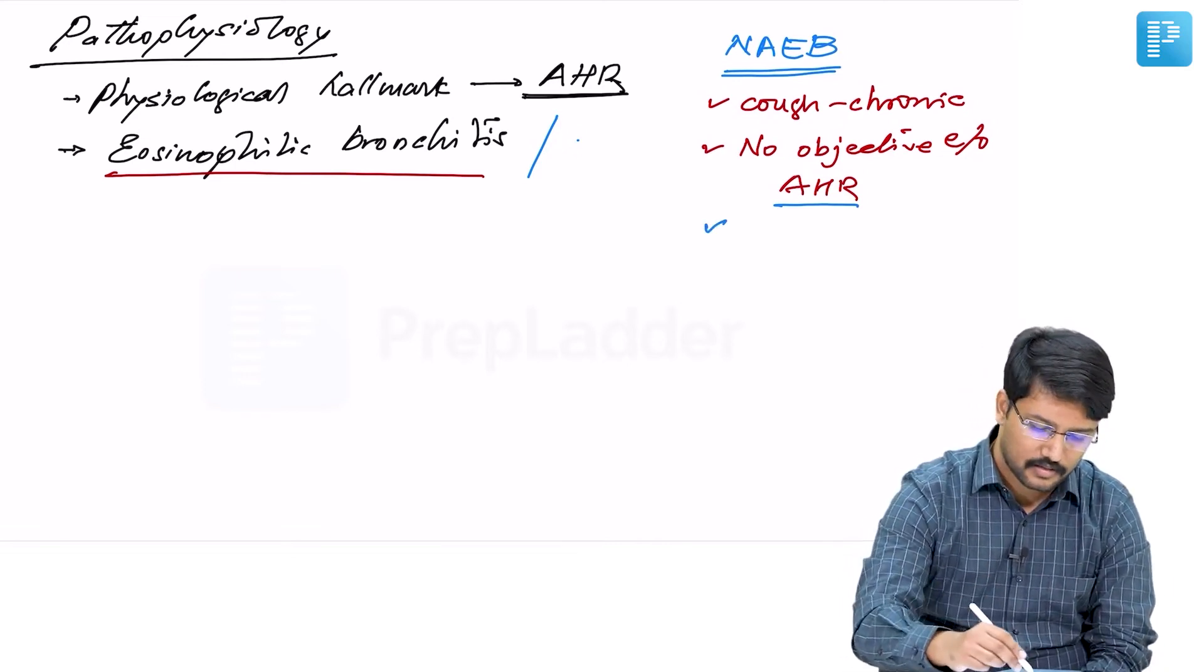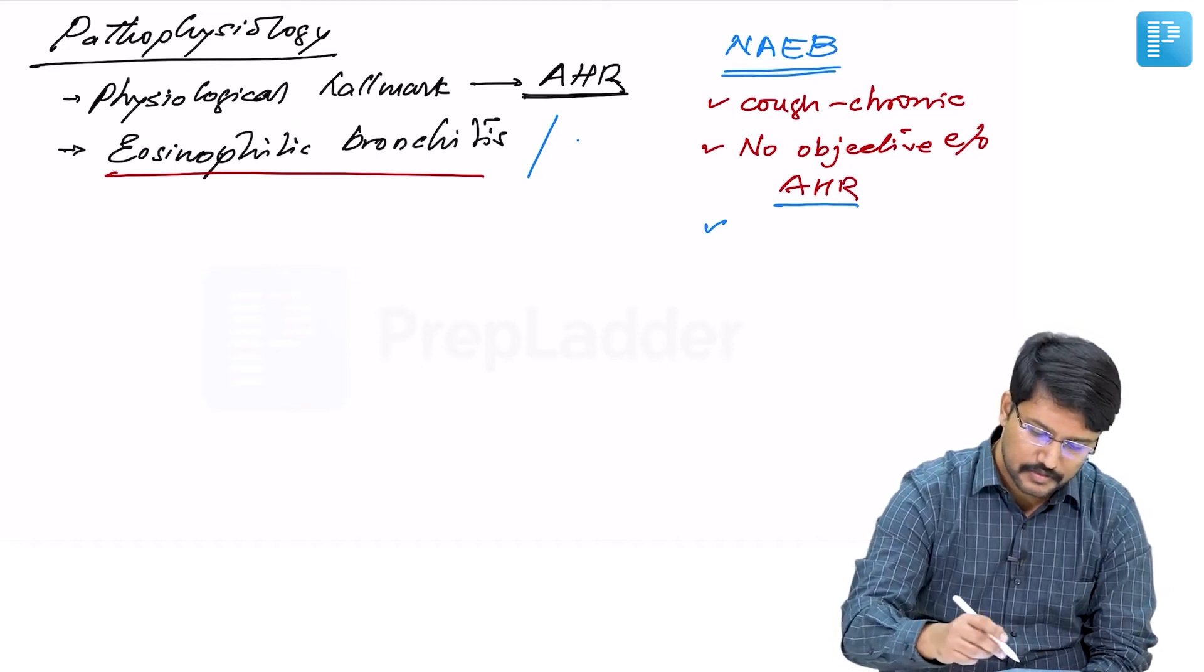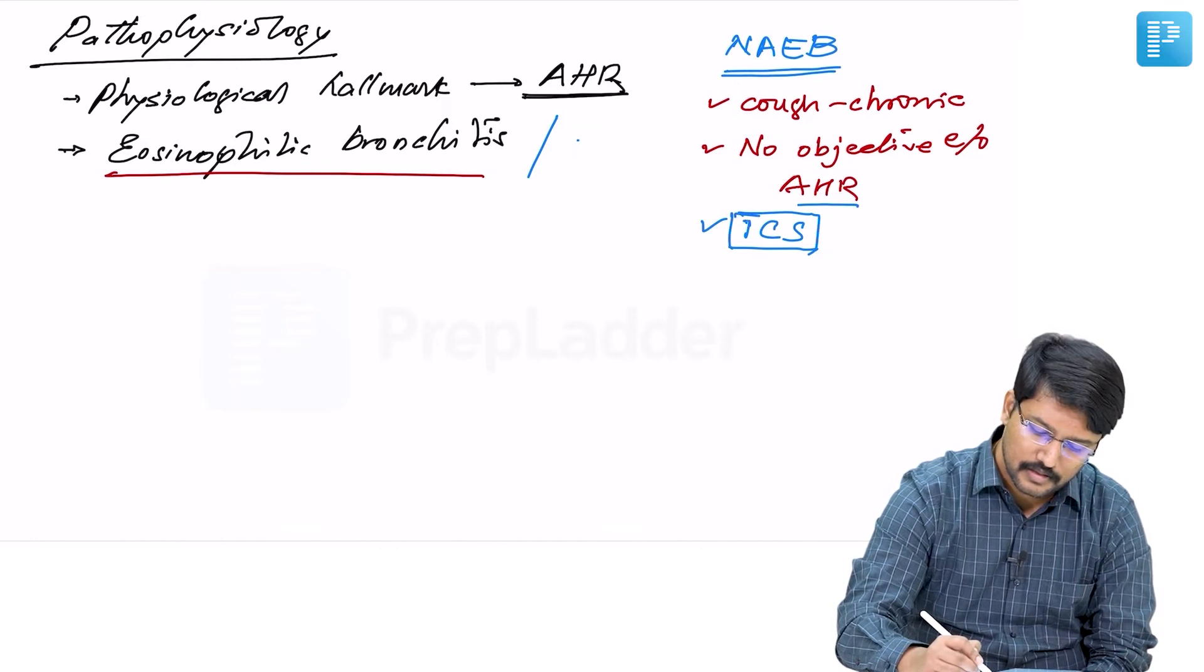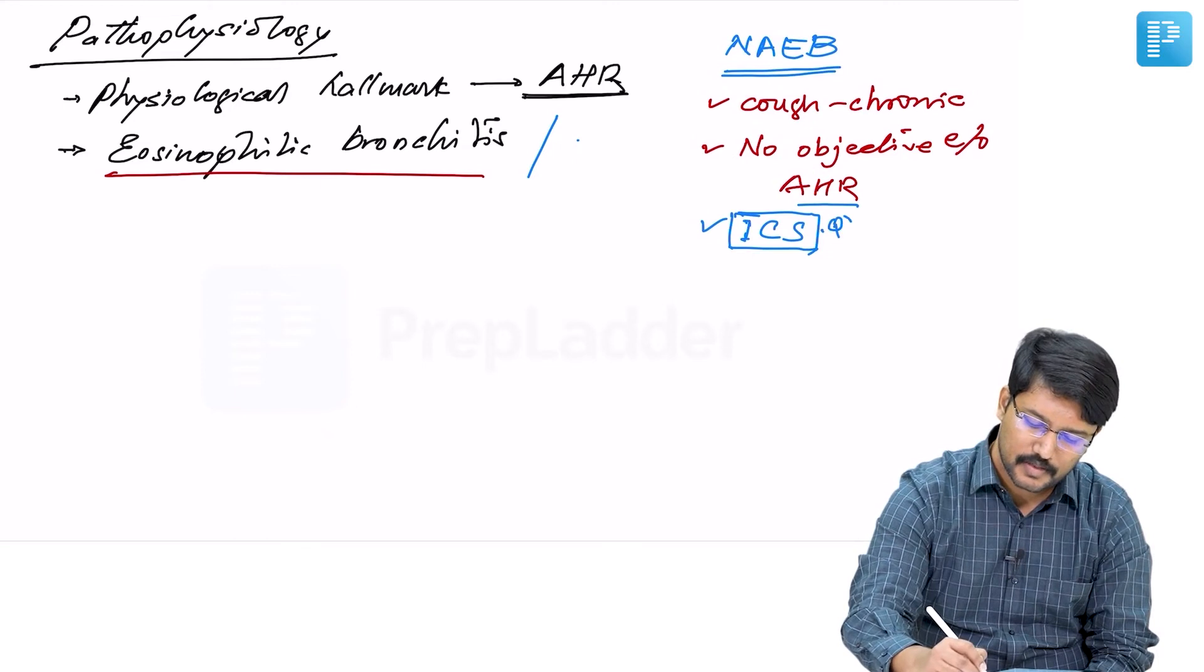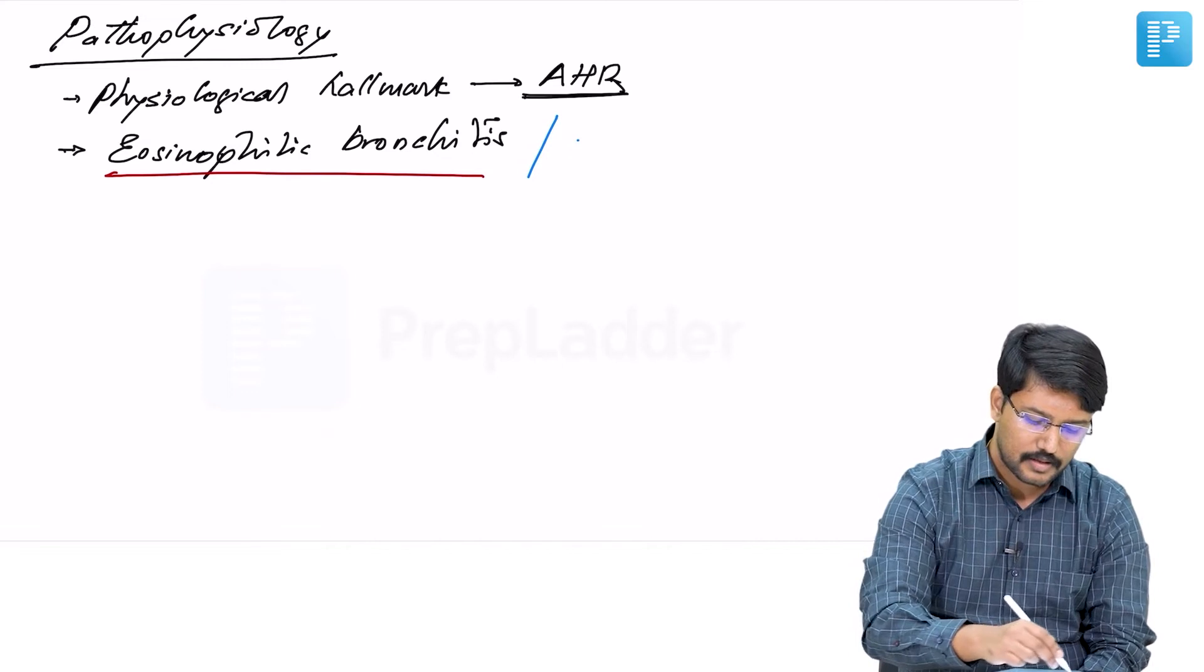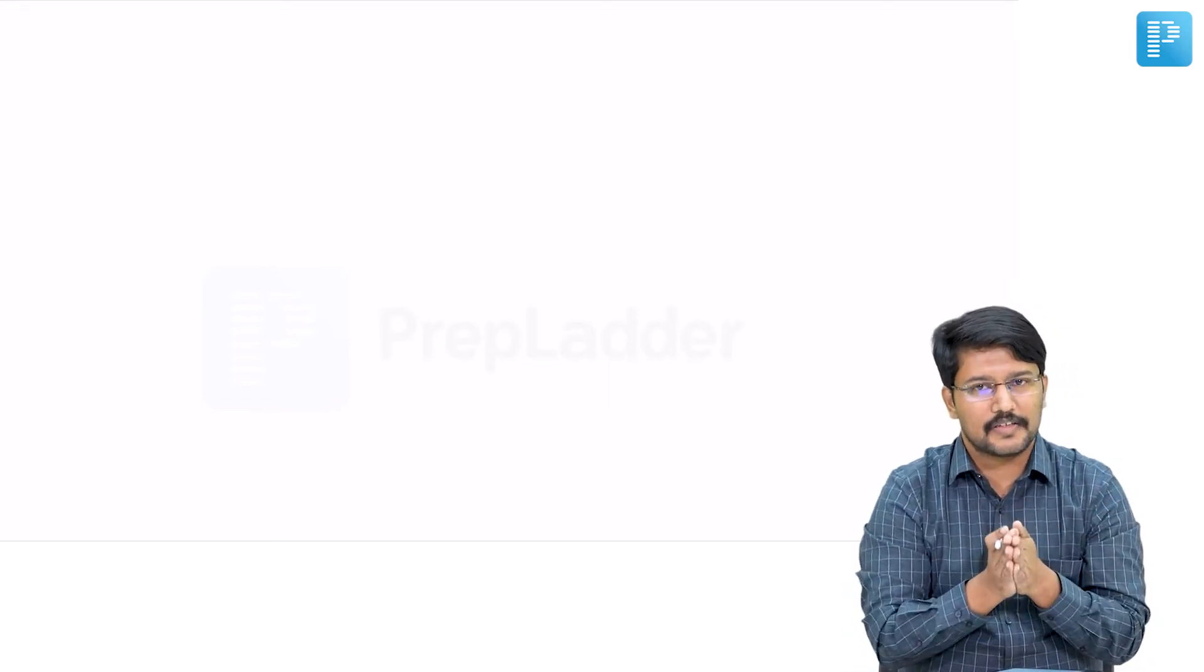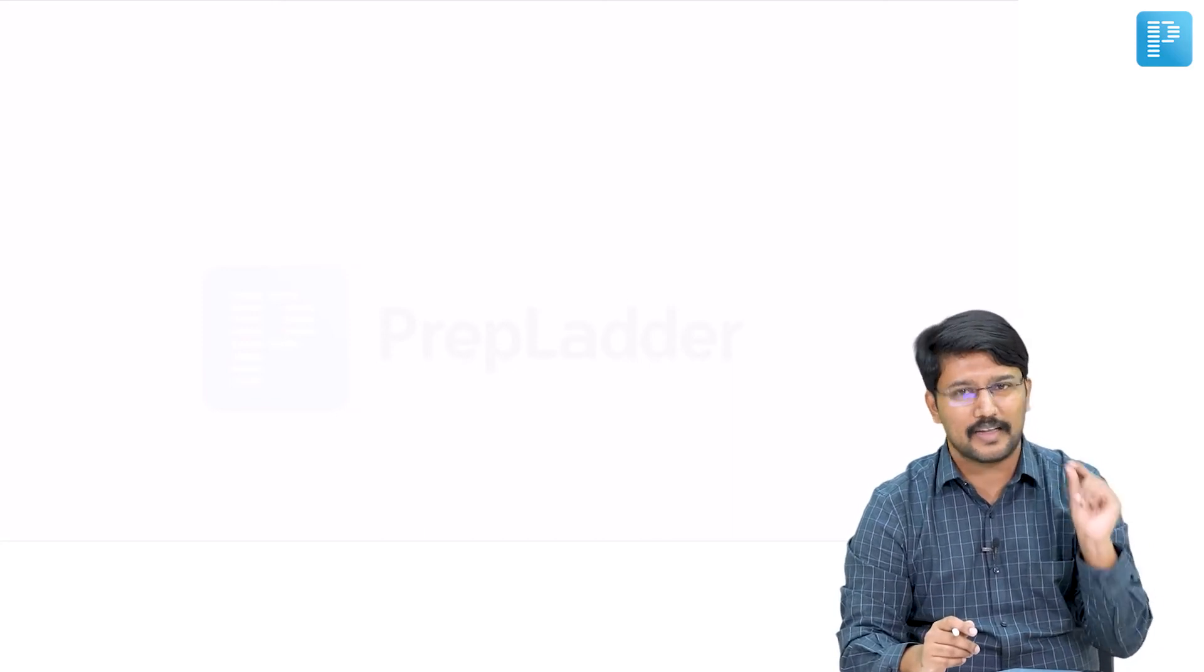Bronchodilator reversibility is absent in patients with non-asthmatic eosinophilic bronchitis. These patients do respond well to inhaled corticosteroids. The treatment of choice for patients with NAEB is inhaled corticosteroids. Now coming back to asthma proper, we understand that in the pathophysiology, it is a disease led by eosinophils, and we should understand why there is hypereosinophilia and eosinophilic inflammation in asthma.